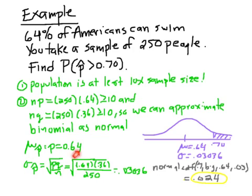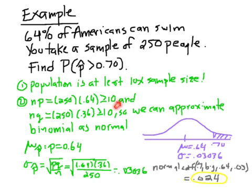The mean of all the p-hats is p — it's 0.64. Notice this is p. Standard deviation of all the p-hats: here's this new formula, it's actually a formula from chapter 8. So I get the standard deviation of the sampling distribution. Because I can approximate the binomial distribution as normal, the sampling distribution of all p-hats is normal. So I just use normal CDF — it says 0.7, big number, 0.64, which is this number, and then 0.03, which is this number. And I get about 2.4% as my answer. So that's the probability — it's the probability that when you take a sample proportion, the value of that sample proportion is greater than 70%.